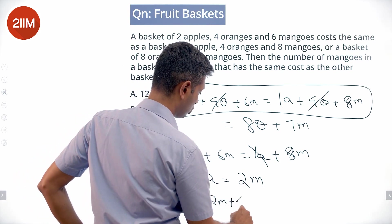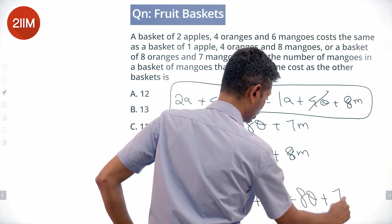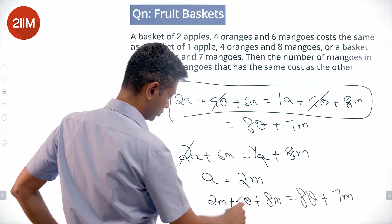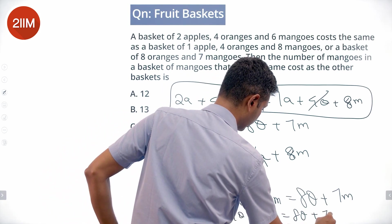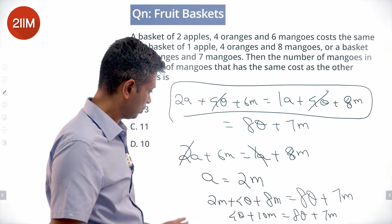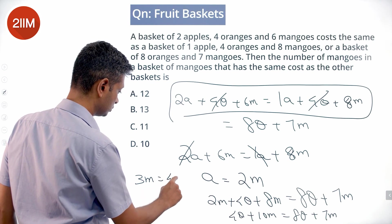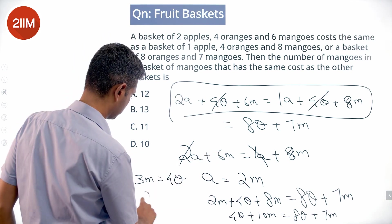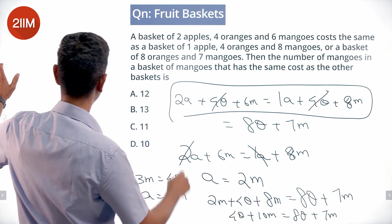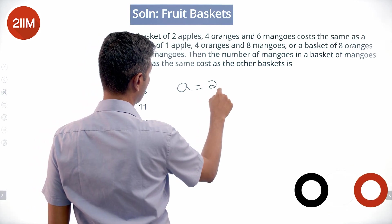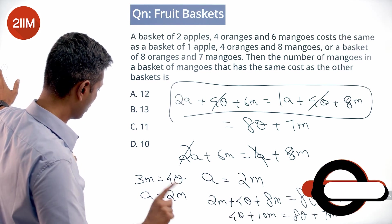Now plug apple = 2 mangoes into the other equation: 1 apple + 4 oranges + 8 mangoes becomes 2 mangoes + 4 oranges + 8 mangoes = 10 mangoes + 4 oranges. Setting this equal to 8 oranges + 7 mangoes gives us: 3 mangoes = 4 oranges, so one orange is three-fourths of a mango.